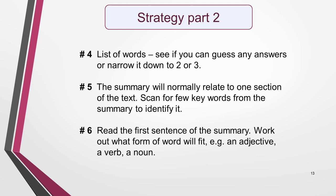If the question includes a list of words, see if you can guess any answers — you may be able to narrow it down to two or three words. There will be other words that are obviously wrong. The summary will normally relate to one section of the text, probably two to three paragraphs. Your next job is to identify this. Pick out a few key words from the summary to scan for. Names, numbers, places and dates are ideal if there are any, as these will be easy to spot. Remember that synonyms could be used. When you've made your selection, scan for them.